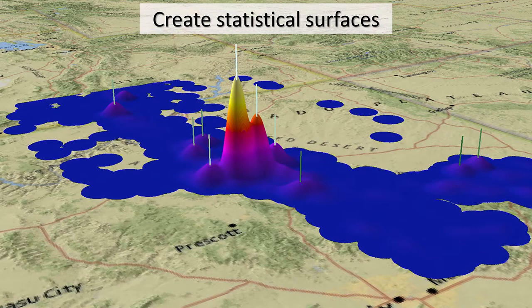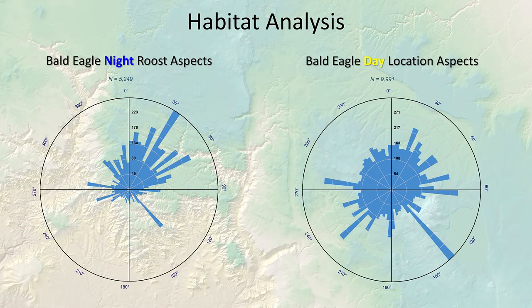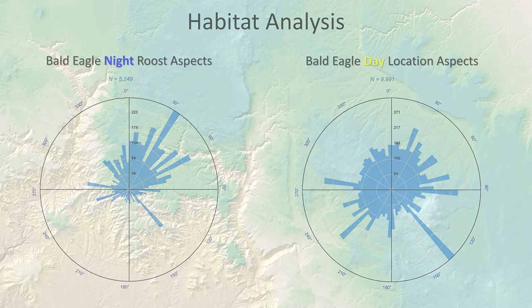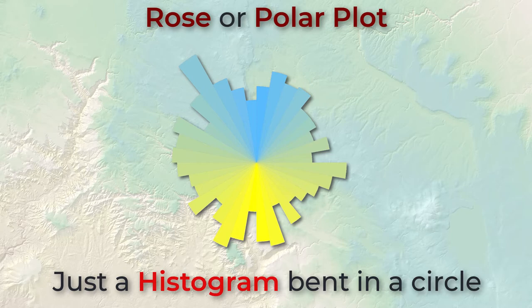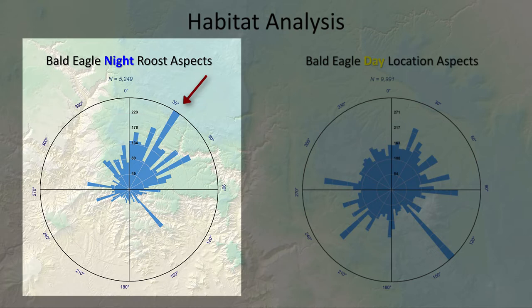Here's another example of a kernel density surface used with bald eagle locations. We had some bald eagles with radios on them, and based on observations over time we can see the areas the eagles seem to spend most of their time. Based on these same locations we can also see if there's any bald eagle preference in terms of the aspect of the landscape — when eagles roost, do they care about what direction the landscape is facing? This is interesting because bald eagles in Arizona are usually here during the winter, so these are mostly winter locations.